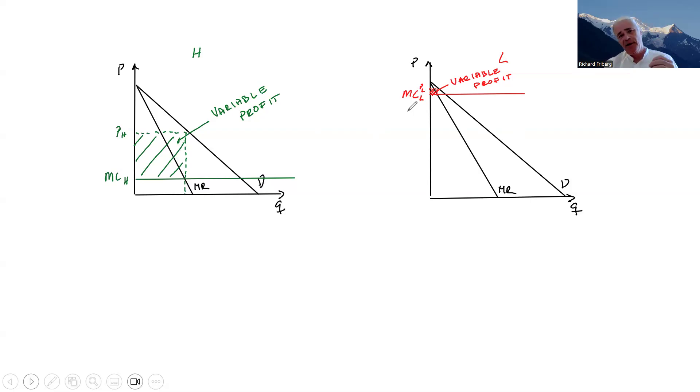Free entry means that we expect firms, as long as there are profits to be had in the industry, to be coming in. So if there are zero profits for a firm like this, clearly this firm would be making profits, and vice versa. If this firm is making zero profit, a firm like this would be making losses.